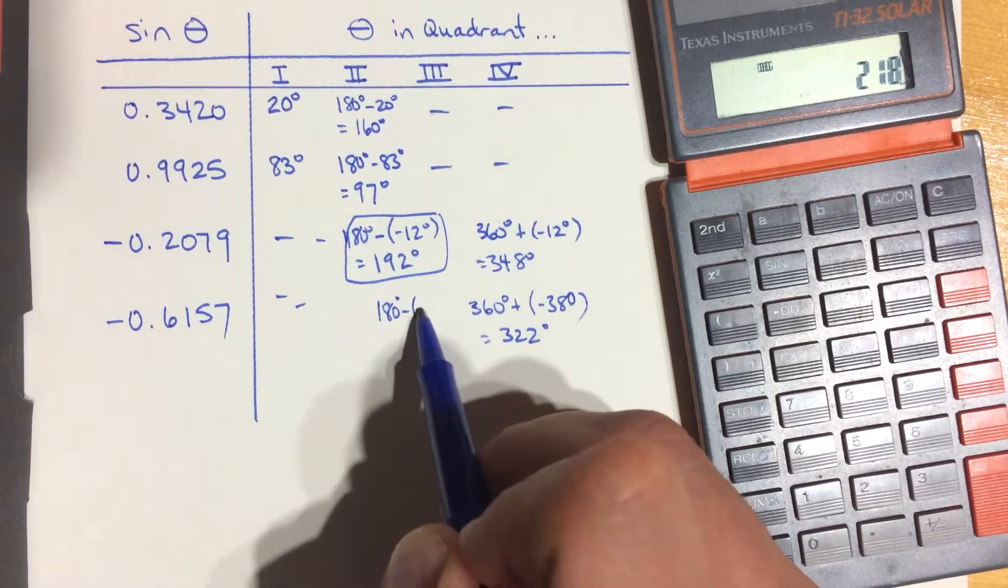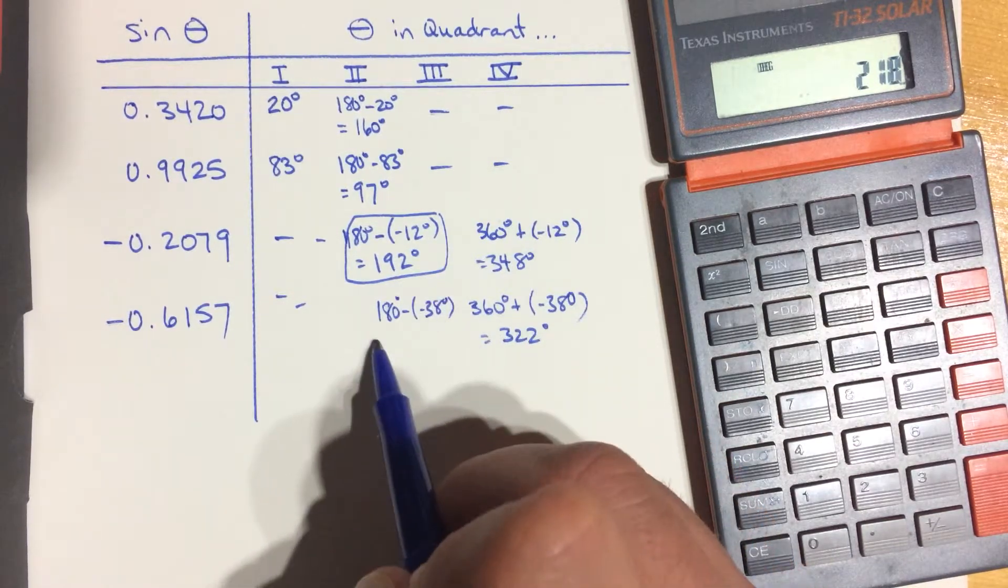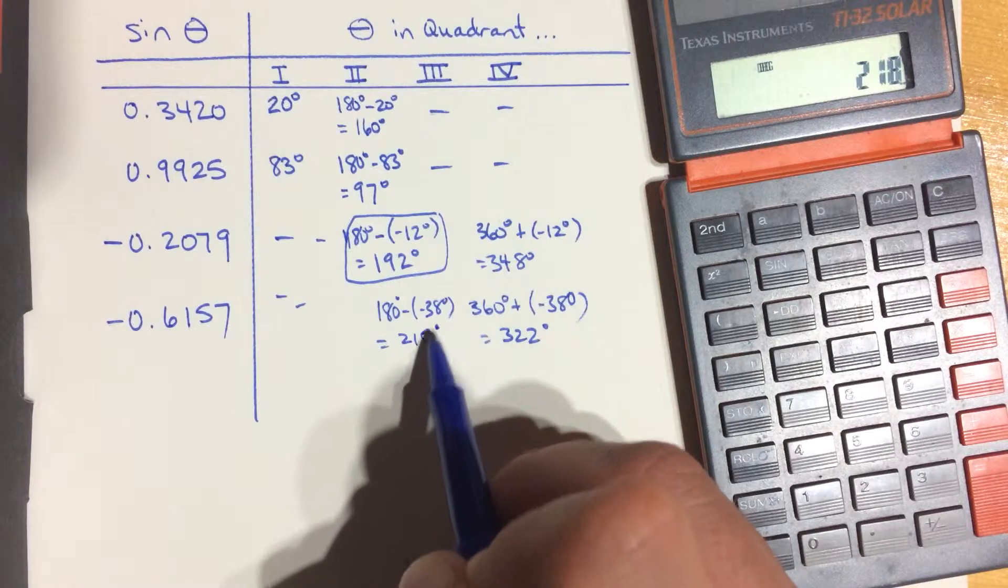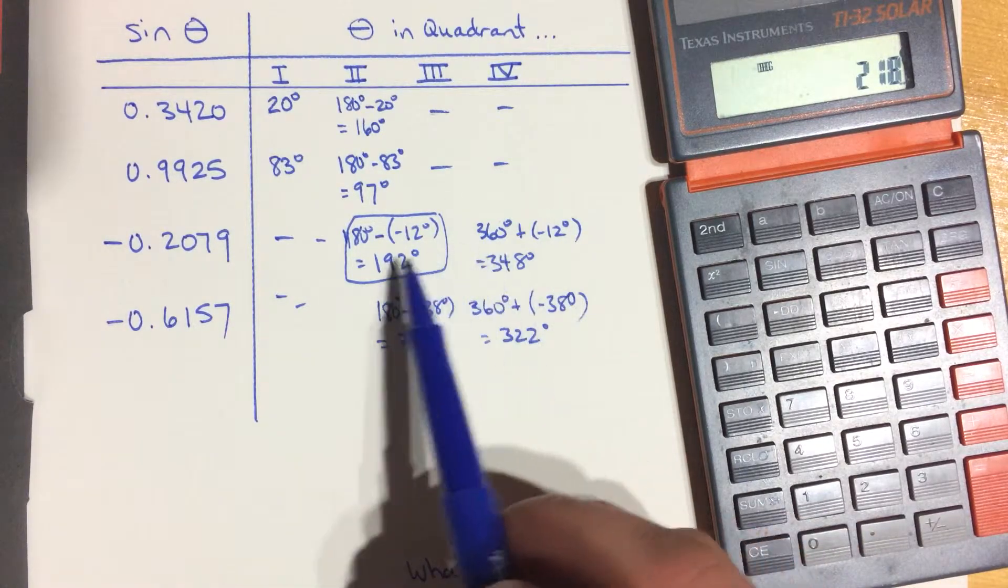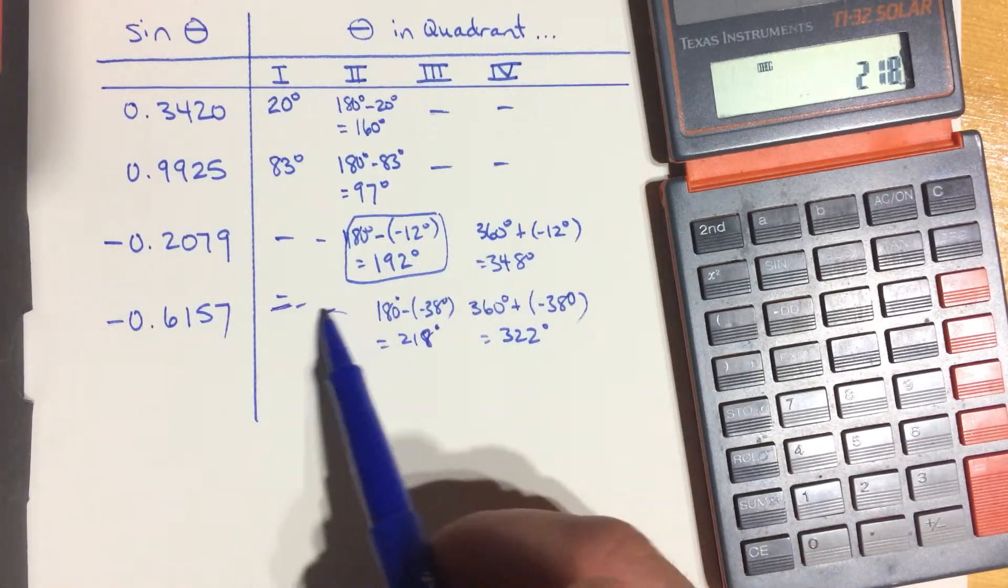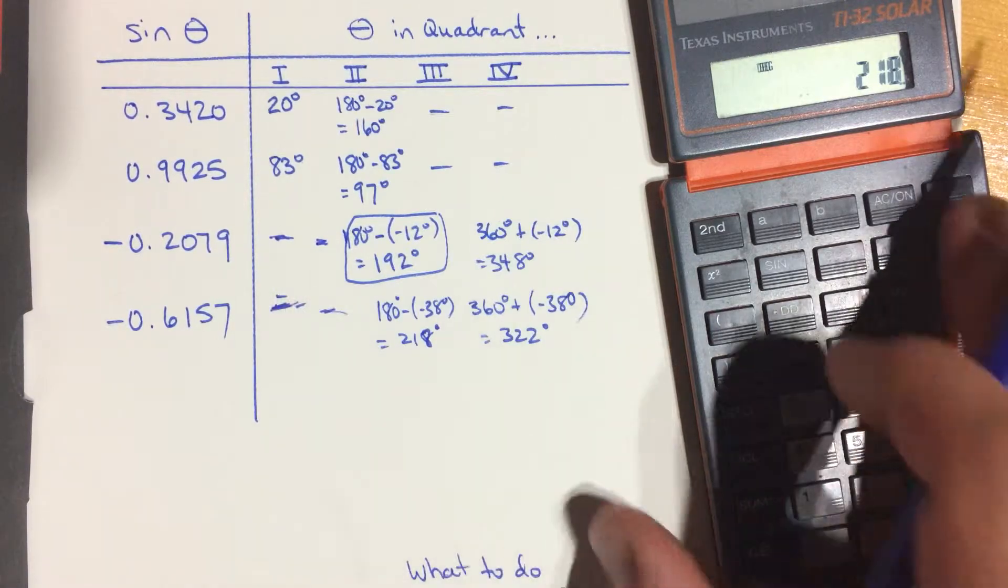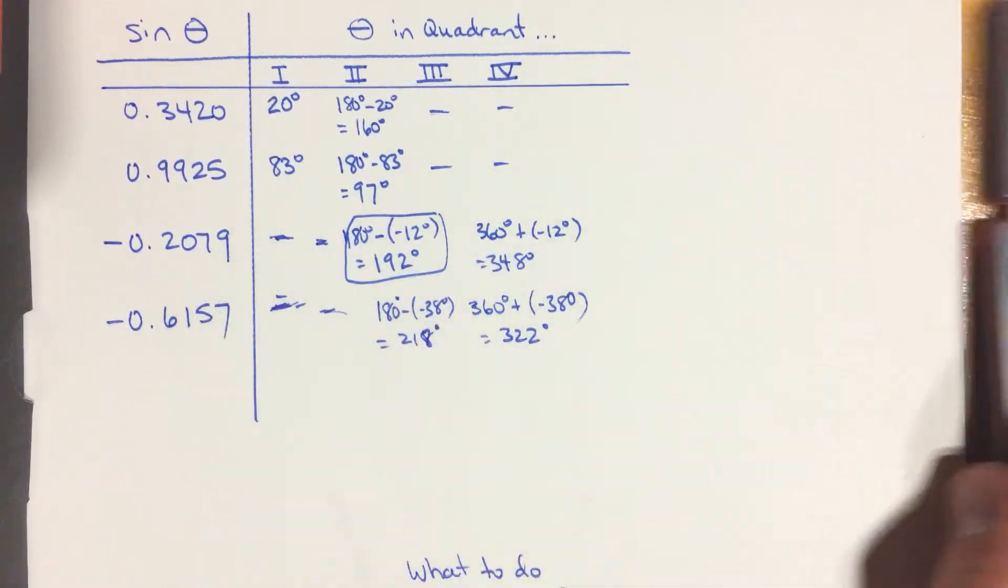Or 180 minus negative 38 degrees, which is 218 degrees. Sorry, that got a little messy. So these are in the third and fourth quadrants, not in the first and second quadrants, because I have a negative sine value. That can't happen.